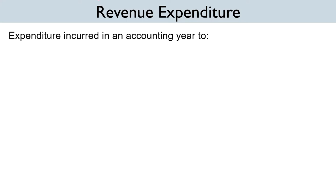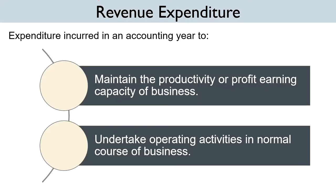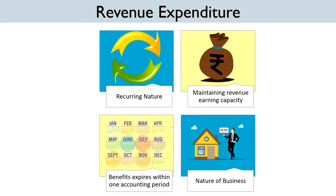Revenue Expenditure is expenditure incurred in an accounting year to maintain the productivity or profit-earning capacity, or working capacity of the business, or to undertake operating activities in the normal course of business. We have four criterions on the basis of which we can identify whether an expenditure is a revenue expenditure or not.